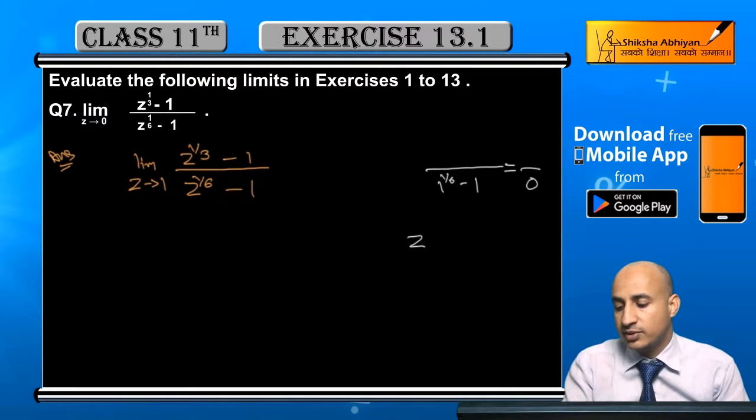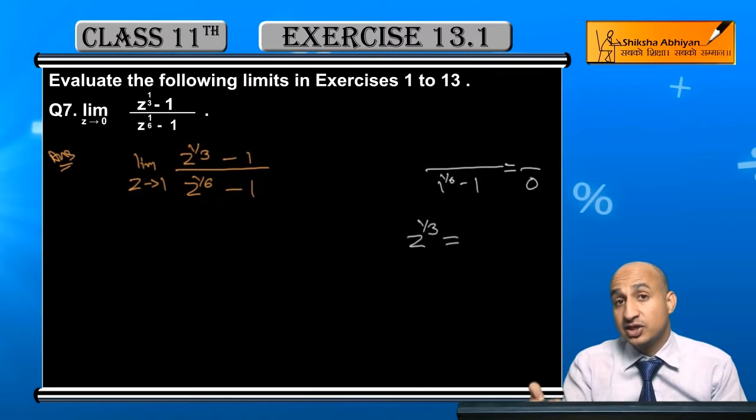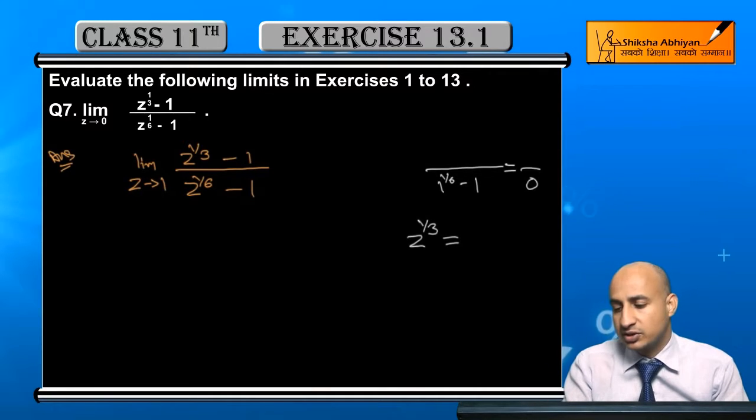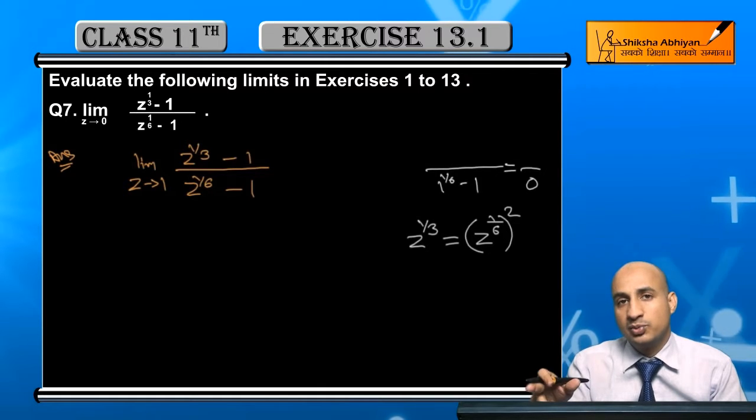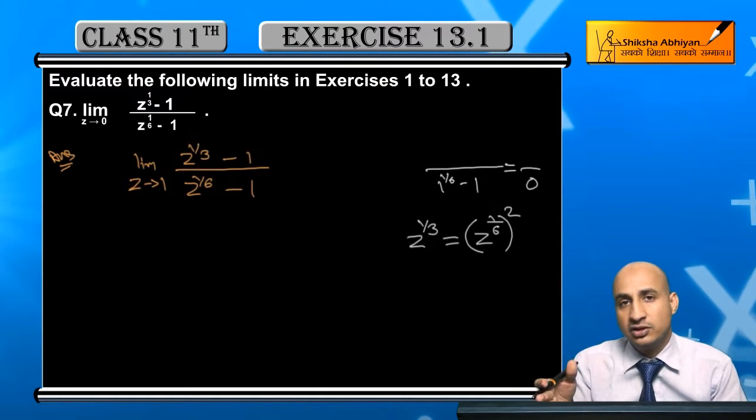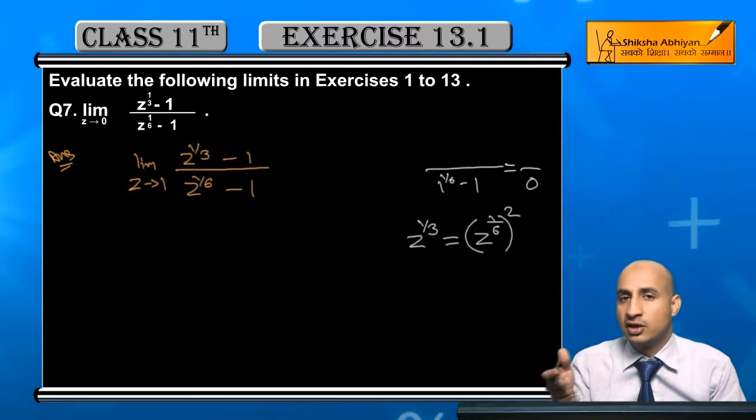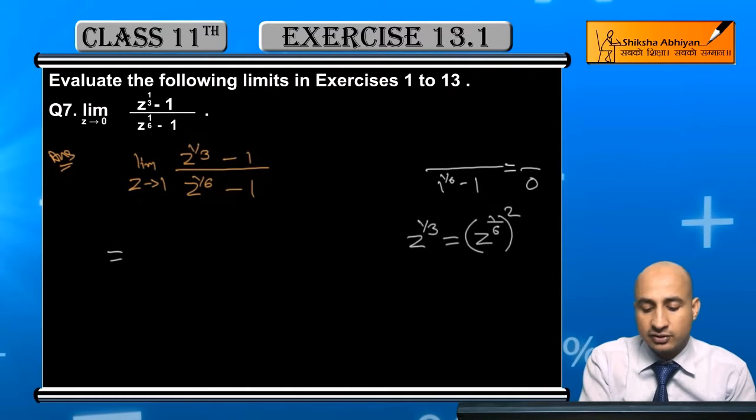Now 1 to the power 1/6 kya hota hai? 1 hi hota hai. Multiply hota hai 1/6 into 2. This is limit z tending to 1, z to the power 1/6 ki power square minus 1 upon z to the power 1/6 minus 1.